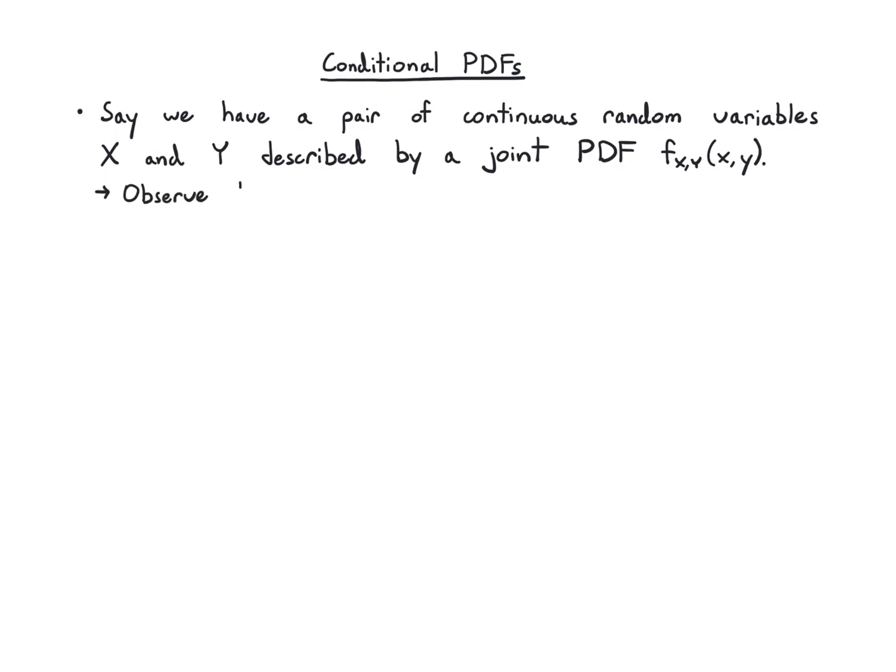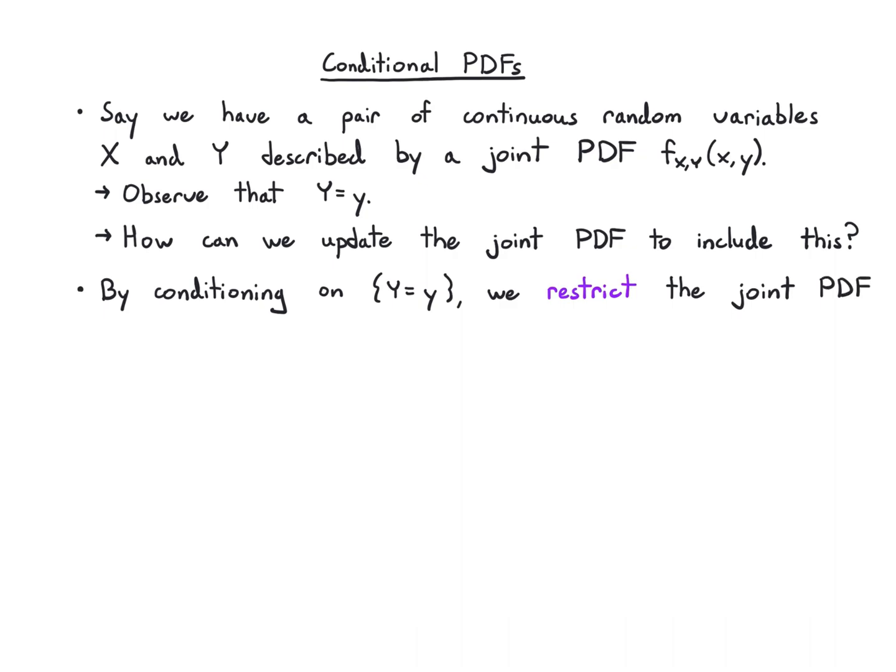All right, and let's say we now observe that Y, the random variable, is equal to this value little y. I want to update my joint PDF to incorporate this information. So this is just conditioning on this particular event, random variable Y is equal to little y. So we restrict the joint PDF to pairs where that's true. And we also need to rescale our PDF, and in this case we'll do it by dividing by the marginal PDF of y, and that leaves us with this object we call the conditional PDF f of x given y.